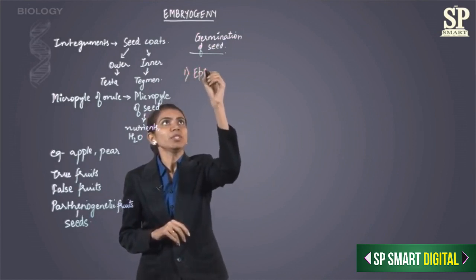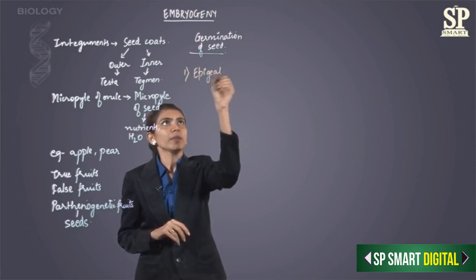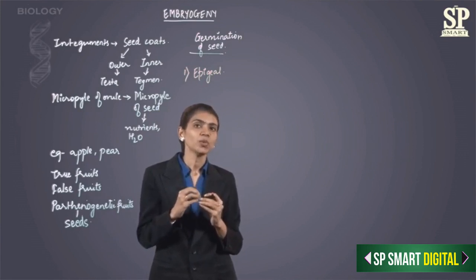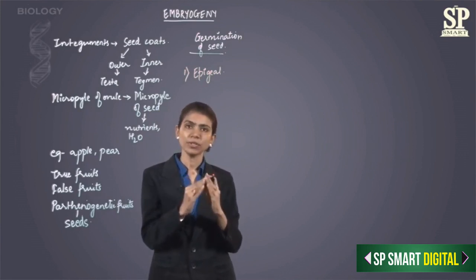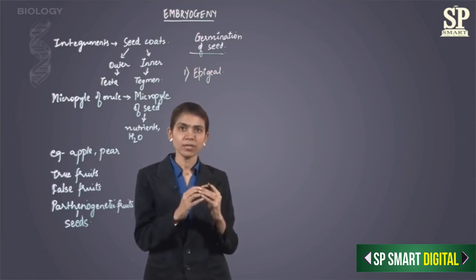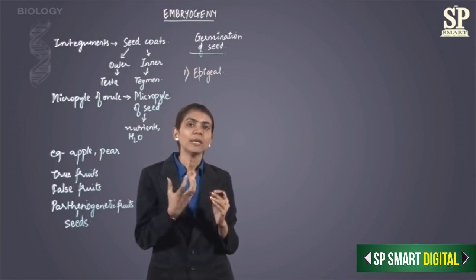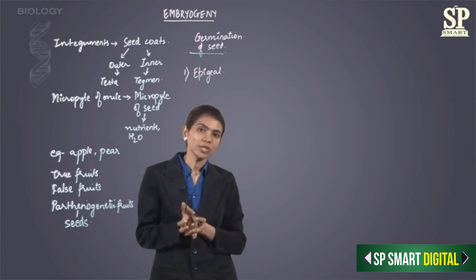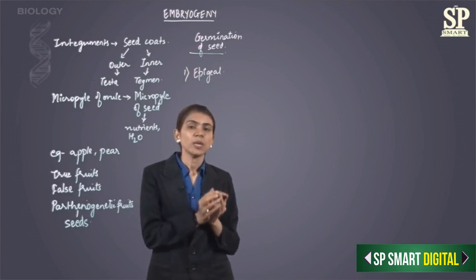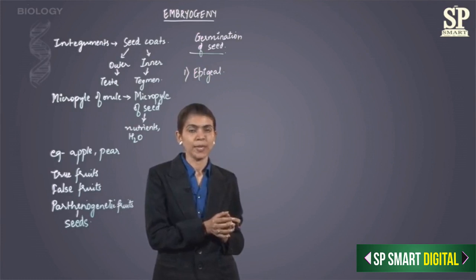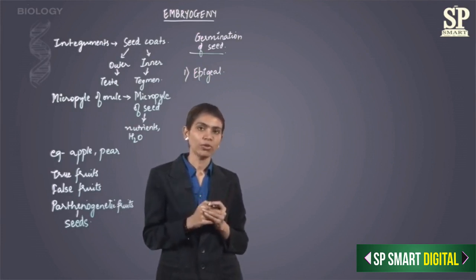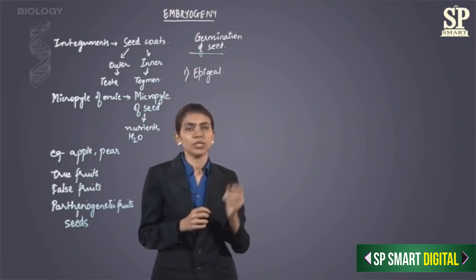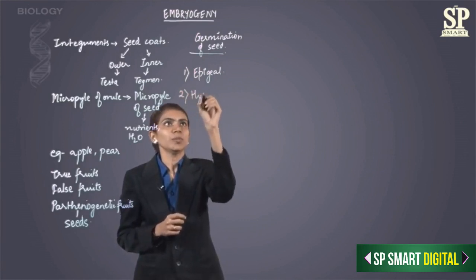The first is called epigeal germination. In epigeal germination, the hypocotyl grows rapidly — it grows so rapidly and so much that the cotyledons come to lie above the surface of the soil. Once the cotyledons come above the surface of the soil, they form leaf-like green structures. Until the seed becomes capable of thriving on its own, the green cotyledons will carry out photosynthesis.